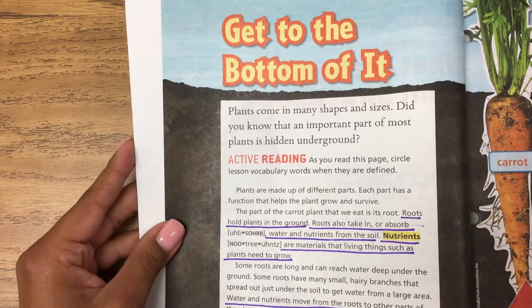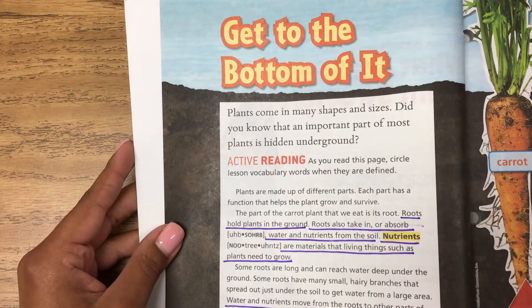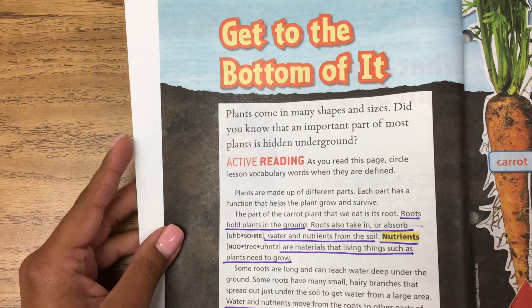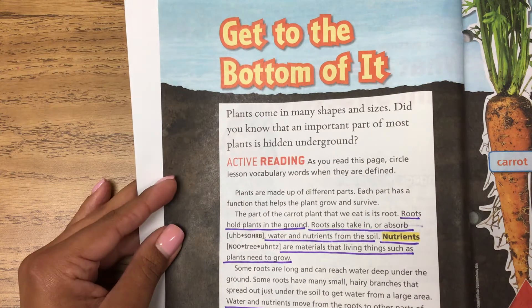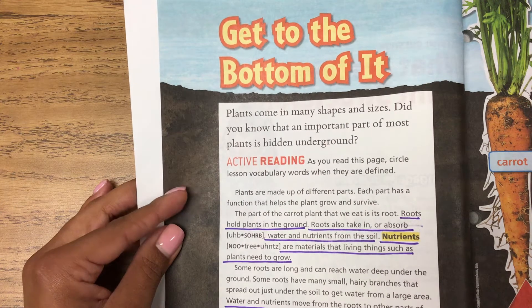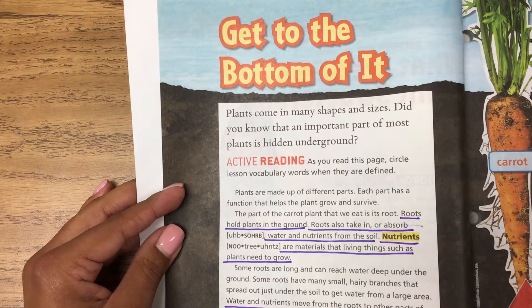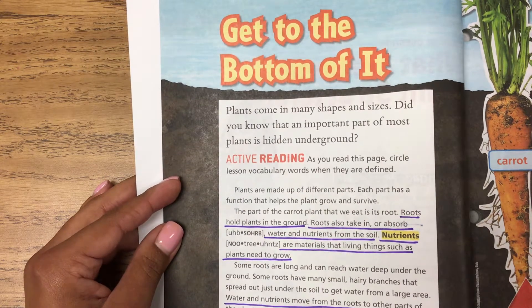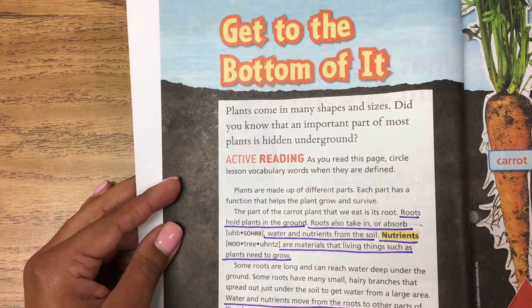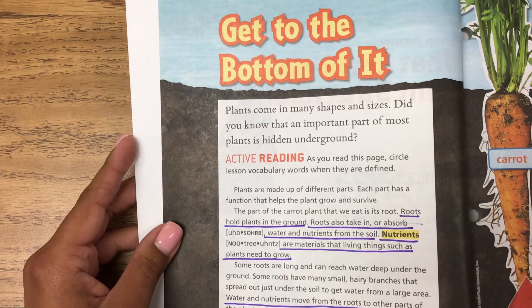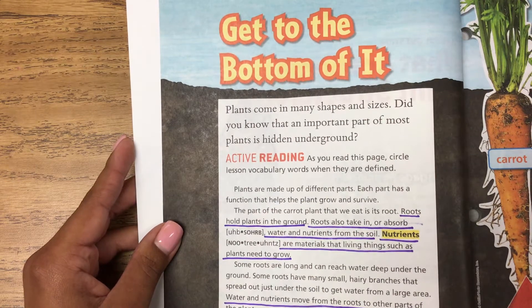Plants come in many shapes and sizes. Did you know that an important part of most plants is hidden underground? Plants are made up of different parts, and each part has a function that helps the plant grow and survive. The part of the carrot plant that we eat is its root.